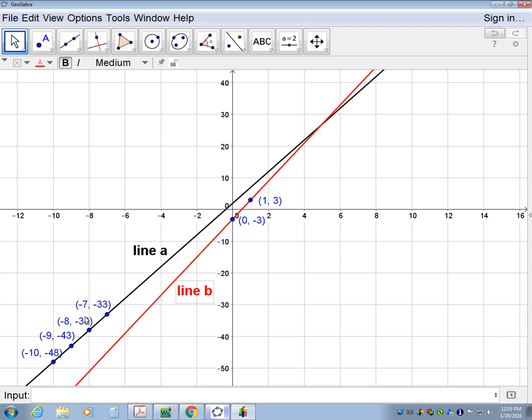Notice that the table of values, negative 7, negative 33, negative 8, negative 38, negative 9, negative 43, negative 10, negative 48, those were written in a table form. It was modeled differently. But again, enter those into GeoGebra and you can plot the line and easily see that B has the greatest rate of change.